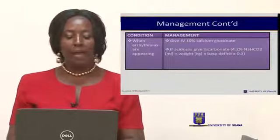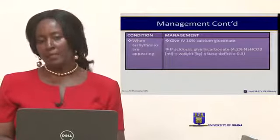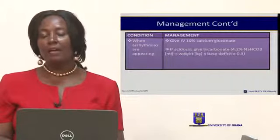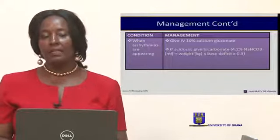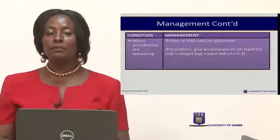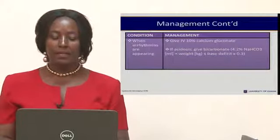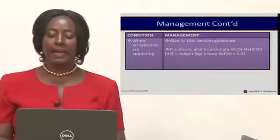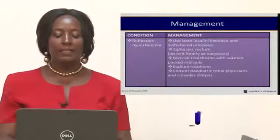When arrhythmias appear, give 10% calcium gluconate. It is important to note that calcium gluconate causes necrosis of tissues, so it is not recommended via scalp vein as it will cause necrosis on the head. It must be given with caution to ensure it is given intravenously; otherwise it causes muscle necrosis. If acidosis is present, give 4.2% bicarbonate, calculated as weight times deficit of 0.3.